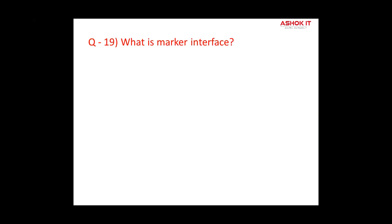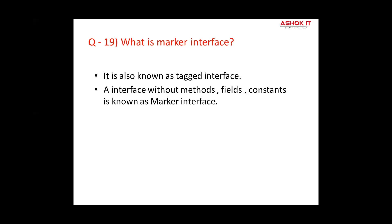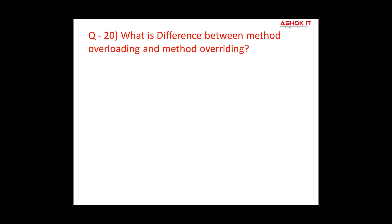Question nineteen: What is a marker interface? A marker interface, also known as a tagged interface, is an interface with no fields or methods — it is an empty interface in Java. Examples include Serializable, Cloneable, and Remote. They are used to indicate something to the compiler or JVM. For example, if the JVM sees a class implements Cloneable, it performs some operations to support cloning.